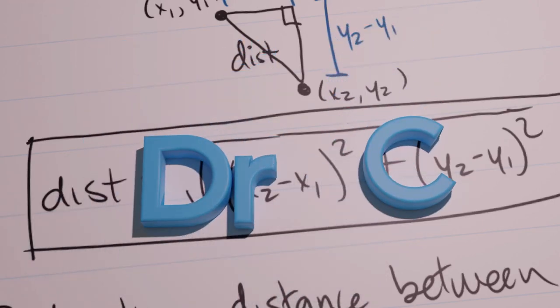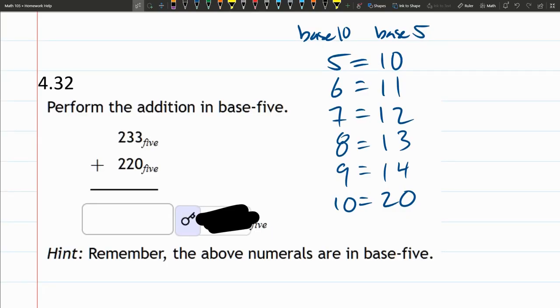The next problem we're doing is addition in base-5. Now in base-5, addition is normal except when you add two numbers together and you get a number of 5 or more.